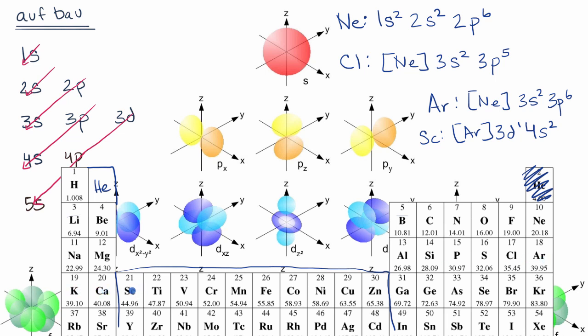Then we, for the most part, and there are exceptions here, we backfill 3d. And then we fill out 4p. And then we fill out 5s.